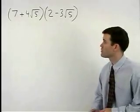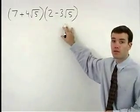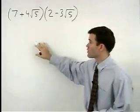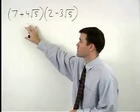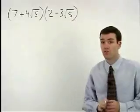Notice that we have two terms inside each set of parentheses here. So to multiply the two parts of the problem together, we use the FOIL method.